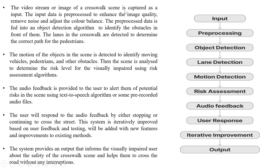The video stream or image of the crosswalk scene is captured as input. The input data is then pre-processed to enhance image quality, remove noise, and adjust color balance. The pre-processed data is fed into object detection algorithms to detect objects in front of the pedestrians. The motion of objects is detected to identify moving vehicles, pedestrians, and other obstacles. The scene is then analyzed to determine the risk level using risk assessment algorithms. Audio feedback is provided to alert the user of potential risks using a text-to-speech algorithm or pre-recorded audio files. The user responds by either stopping or continuing to cross. The system is iteratively improved based on feedback and testing, ultimately providing an output that informs the visually impaired user about the safety of the crosswalk scene.